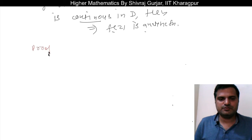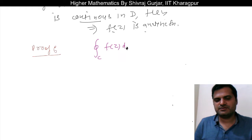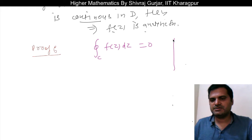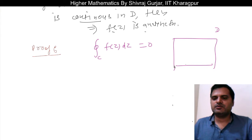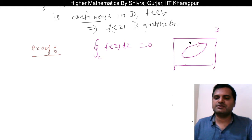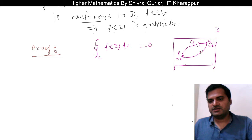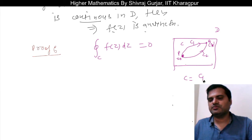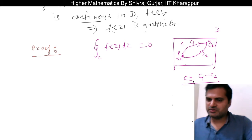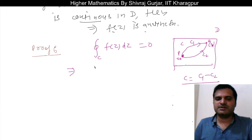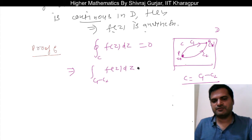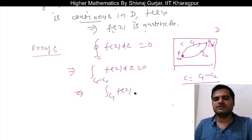Let us see the proof of this. It is given that the integration of f(z) is zero along closed curve C. Let our domain be D. Inside it, there is some closed curve C. Let us say there is some point z₀ (point P) and some point z₁ (point Q). C is made up of C1 from z₀ to z₁, and C2 also from z₀ to z₁. So C is nothing but C1 minus C2.